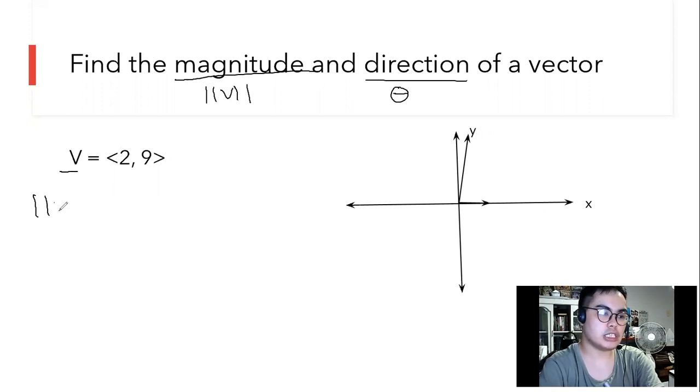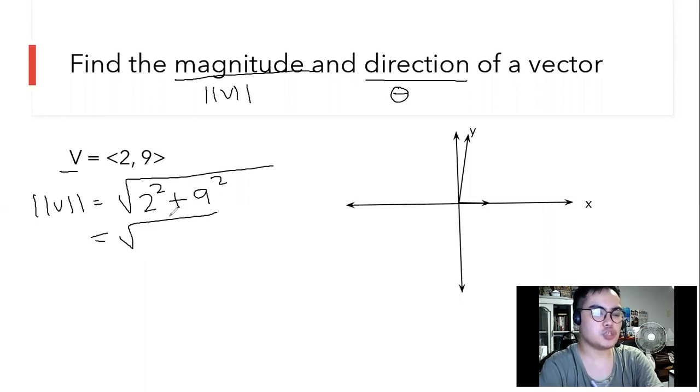To look for this magnitude, we're going to apply the concept of Pythagorean theorem. We're going to square the values each, then place the plus sign. What is the square of 2? It is 4. What is 9 squared? It will be 81. What we're going to do next is add what's inside the square root. Our magnitude is the square root of 85.